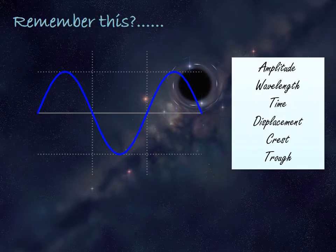Electromagnetic radiation is known as a transverse wave. Remember the following terms: amplitude, wavelength, time, displacement, crest, and trough. Pause the video now and in your workbook draw the wave shown in the presentation and label it with those terms. Then we'll come back and check if you've remembered the different parts of a wave.